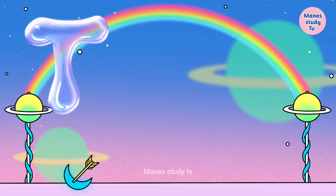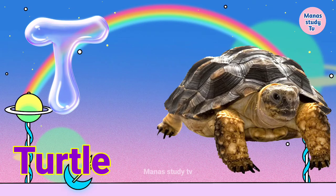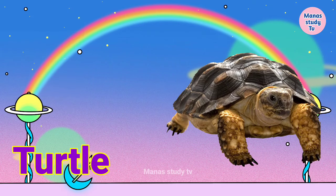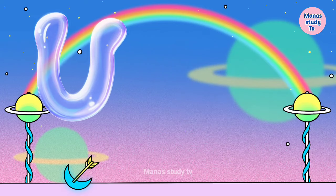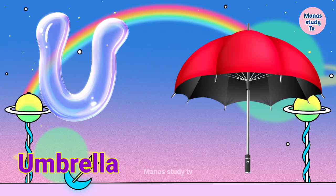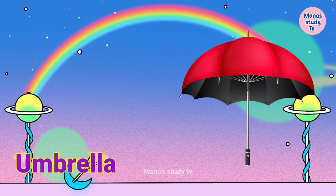T. T for turtle, turtle means kachua. U. U for umbrella, umbrella means chhata.